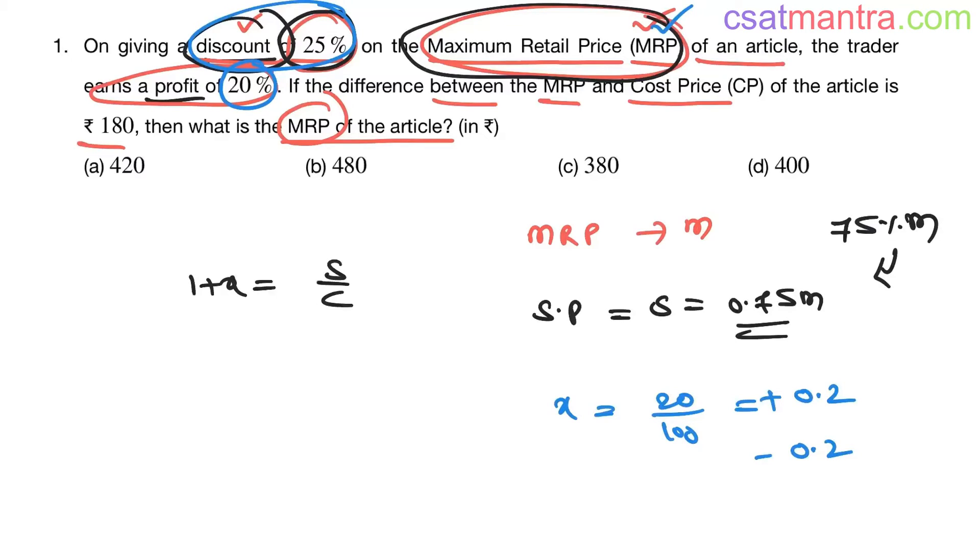Now if the difference between MRP and cost price—cost price we have indicated with C—the difference between MRP minus cost price is 180. Here have no doubt, MRP would be greater than cost price because he is earning a profit. In general, MRP is greater than cost price. So M minus C is equal to 180. From this we can write cost price as M minus 180.